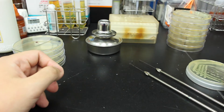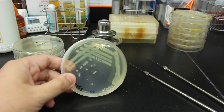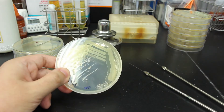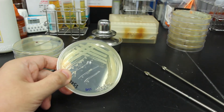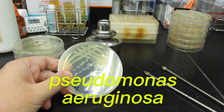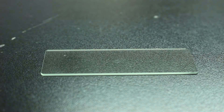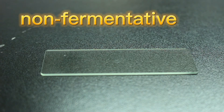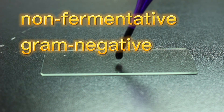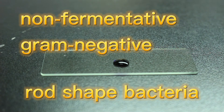In fact, I happen to have the model species here — it's called Pseudomonas aeruginosa. Now, Pseudomonas are non-fermentative, Gram-negative, rod-shaped bacteria.